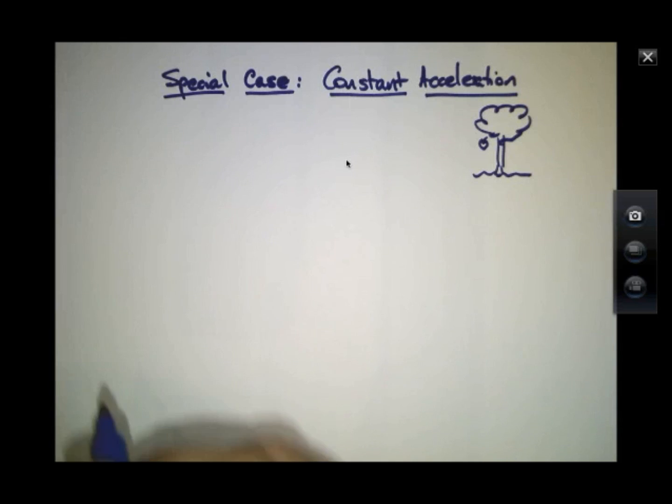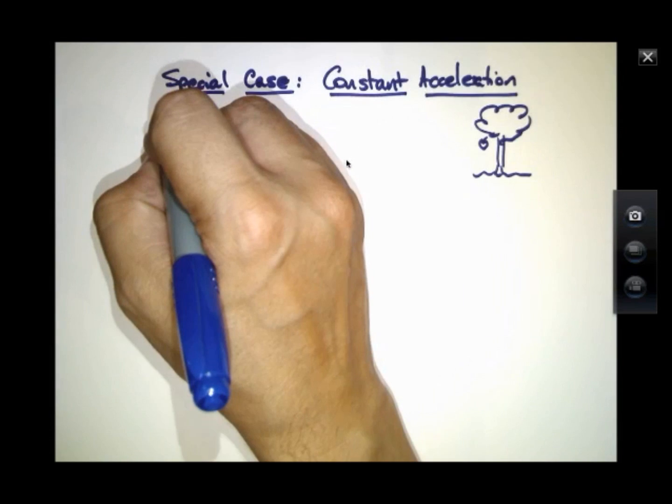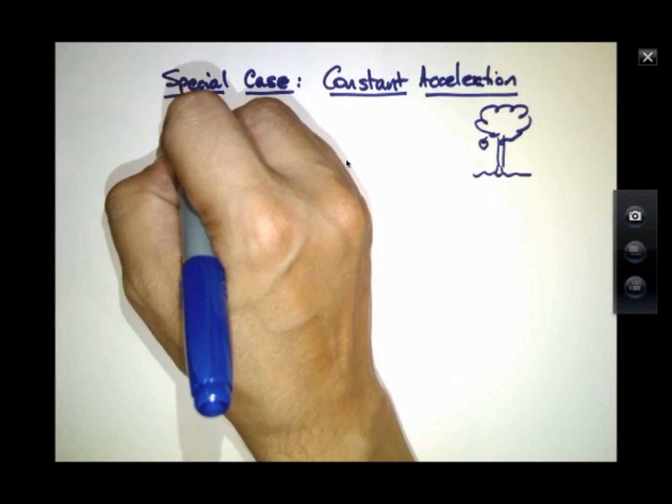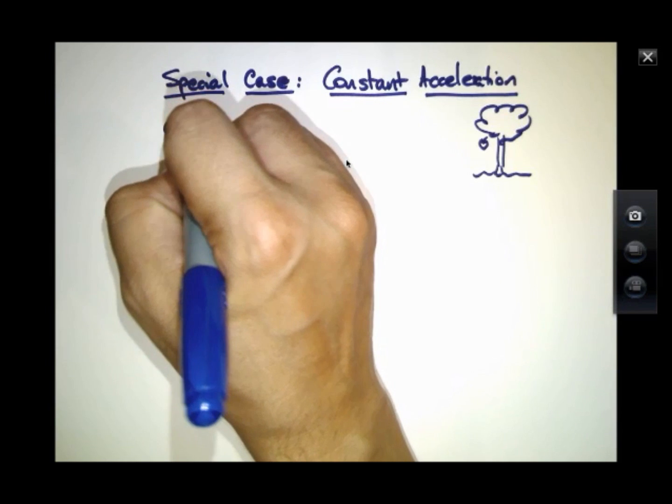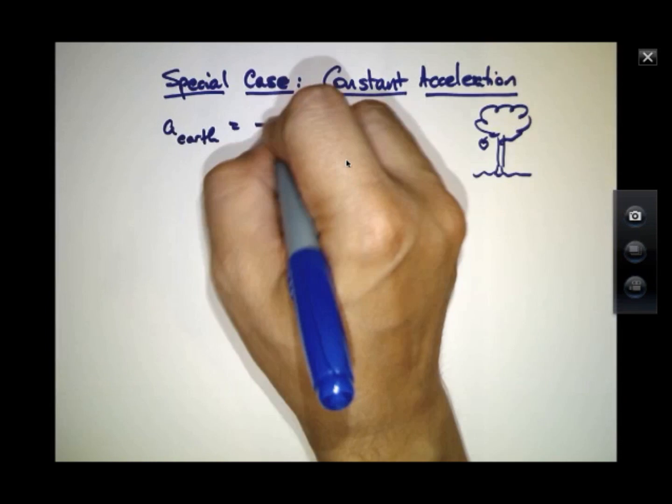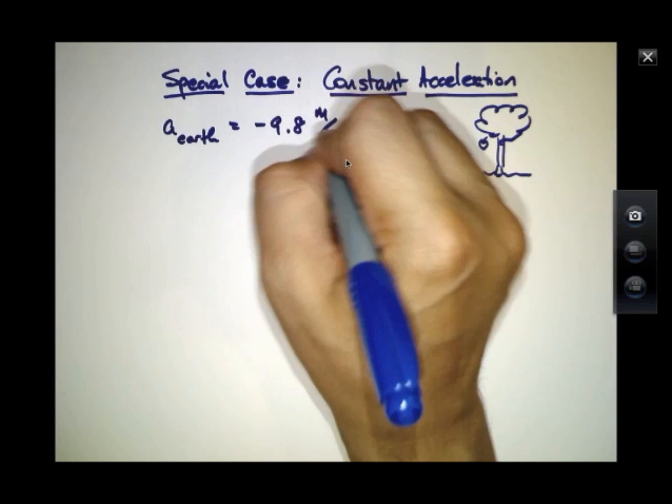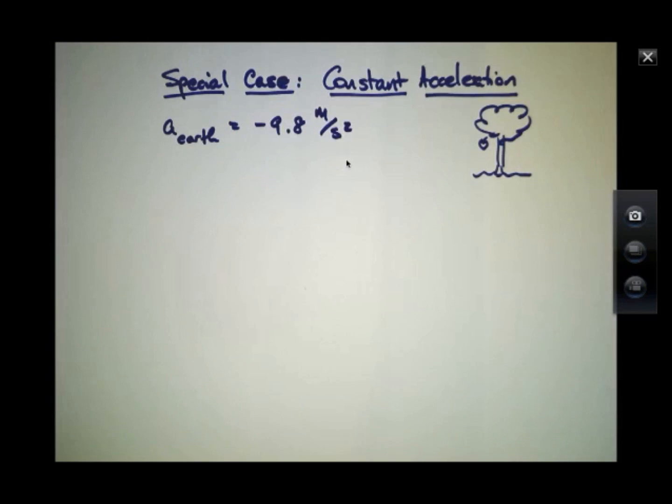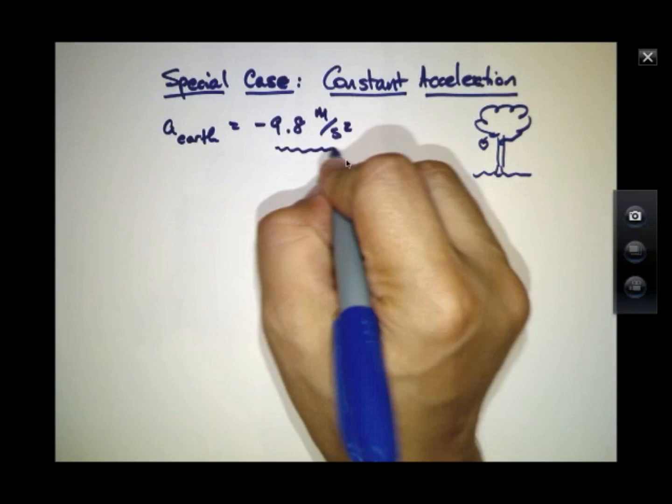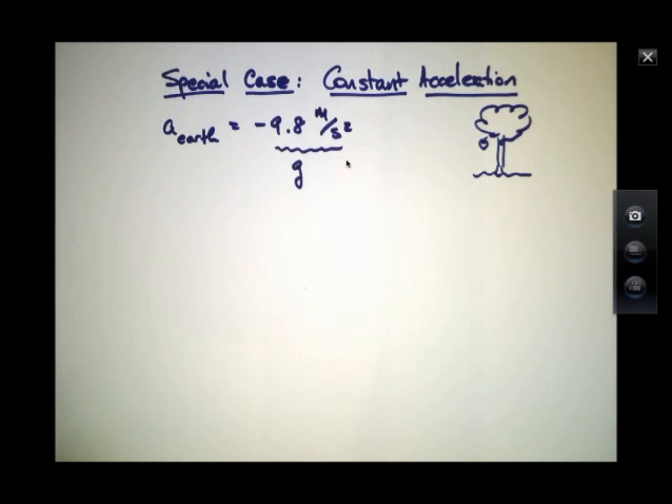We can't justify this just yet, but we will come to talk about that the acceleration here on Earth is rather constant, minus 9.8 meters per second squared. This number sometimes gets the designation of little g, so g is a number that depends basically on being on the surface of the Earth. If we were basically anywhere on Earth, g is about the same number.